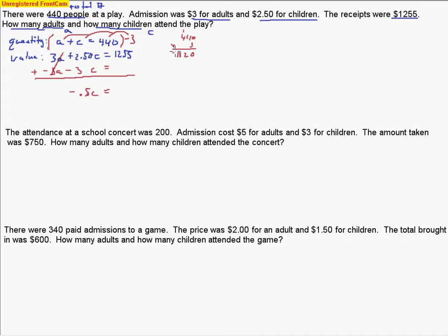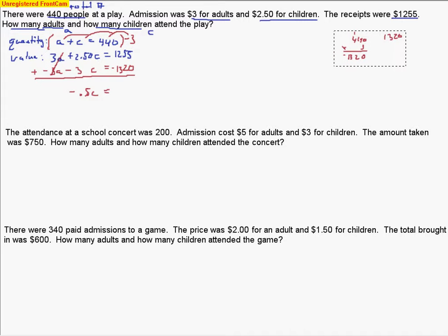1,320 makes sense because it needs to be bigger than 1,255, so I'm confident I did the right thing. Going ahead and doing that subtraction — I'll work it out to the side. It's important when doing your problem to have your work going down the page, maybe off to the side, so the problem can flow without it being all chopped up. Let me set up that subtraction off to the side, making sure I borrow when needed.